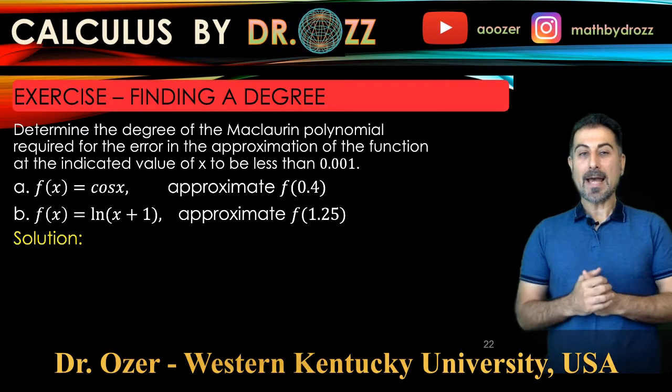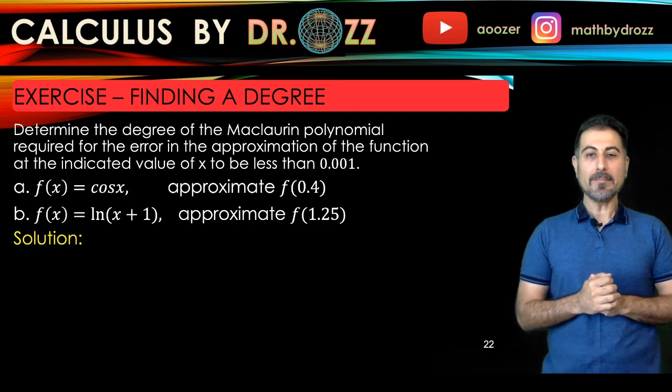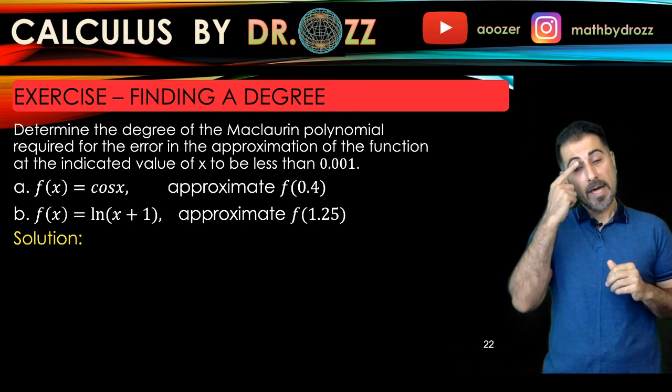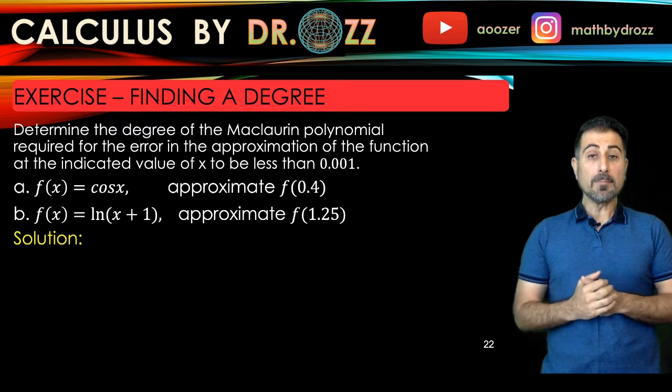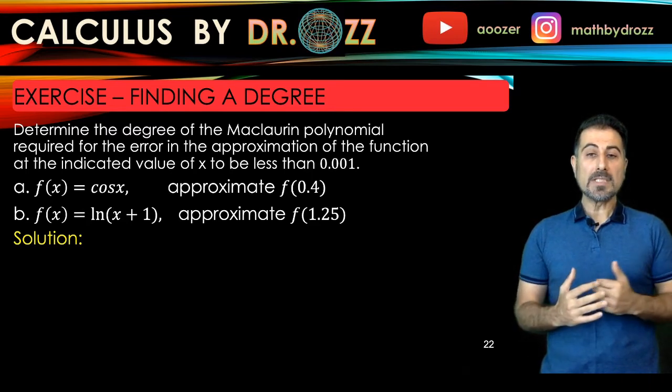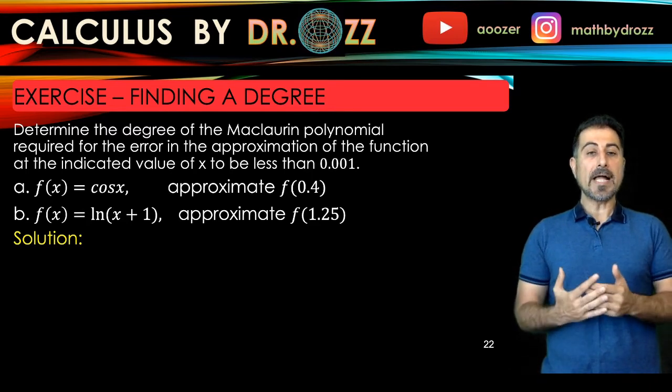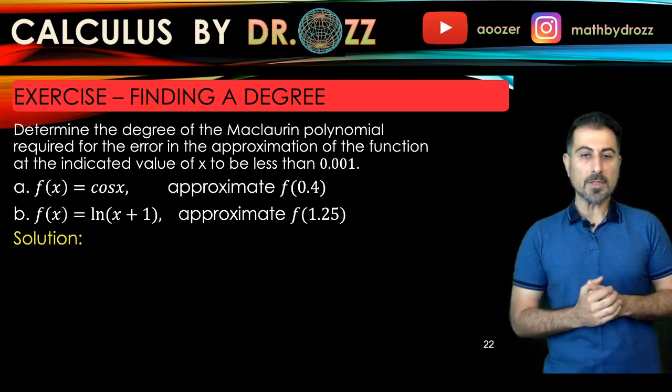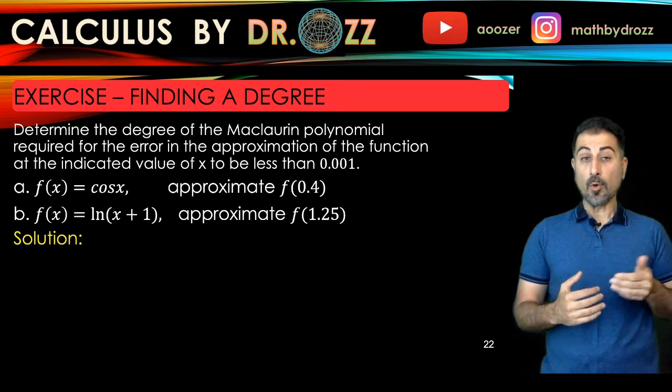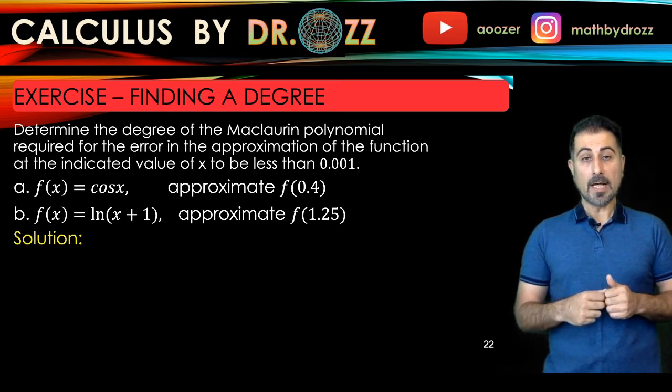Today we're going to have another application of Taylor's theorem. We're going to find a degree of the Maclaurin polynomial to approximate function values. In the first exercise we have the function cosine x and we're trying to approximate cosine 0.4 by using the Maclaurin polynomial.